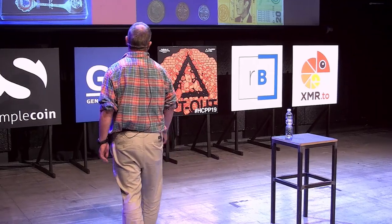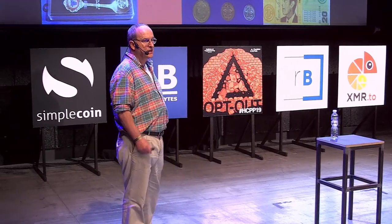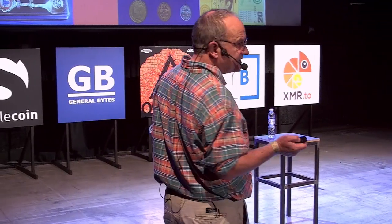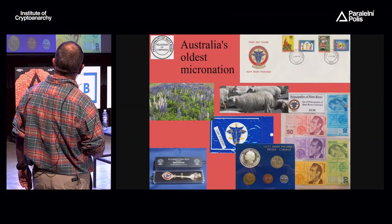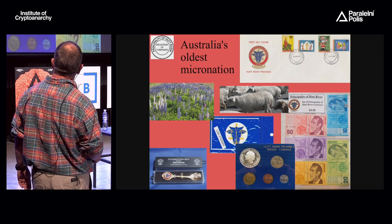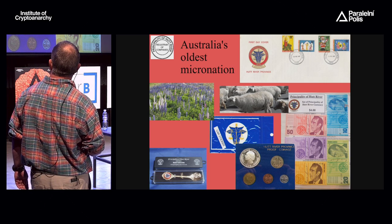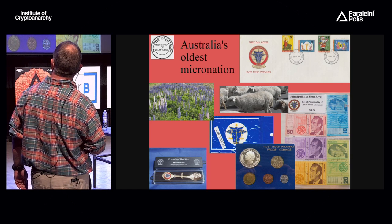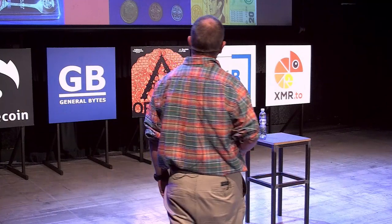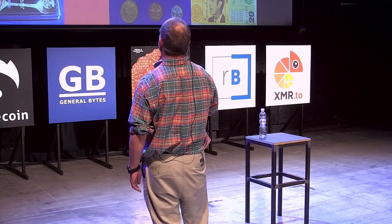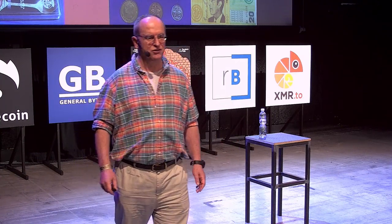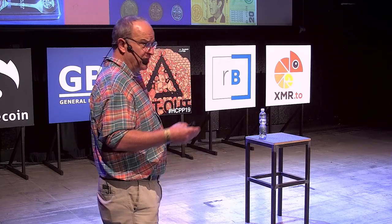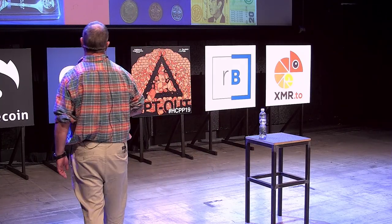Hutt River Province is still going — it's nearly 50 years old. You can visit it; you need to take your passport but they'll stamp it for you. It makes ends meet by selling stamps, presentation packs of their currency, and various knick-knacks. It still sells some wheat and lupins, which is a fodder crop. You can also register your company in Hutt River for a cheaper price than registering it in Australia.